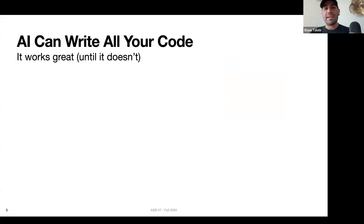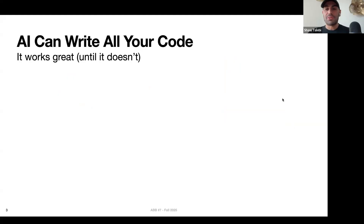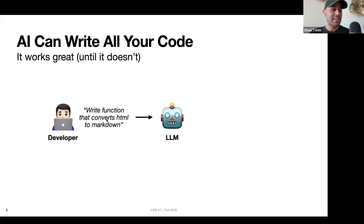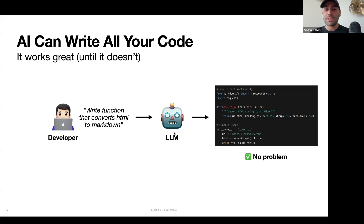Clearly AI has transformed the way we build software, and a big reason is that AI can now write all the code for you. This works really great for straightforward tasks — for example, if you want a function that converts HTML text into markdown, you can just give that ask to an LLM and it'll spit out a reasonable function. Usually no problem.